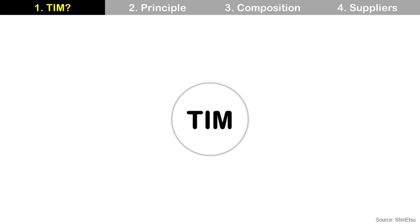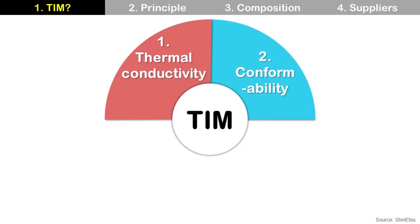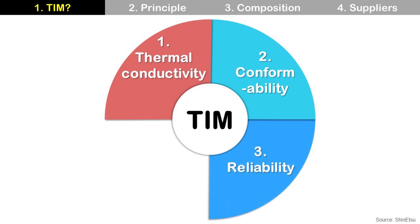TIM has some key requirements. First, you should have high thermal conductivity for efficient heat dissipation. Second, conformability to fill the microscopic gap between the die and the metal lid. If there is a gap with air, it will decrease thermal conductivity drastically, which is very bad. Third, reliability — you should not have any failure during operation.